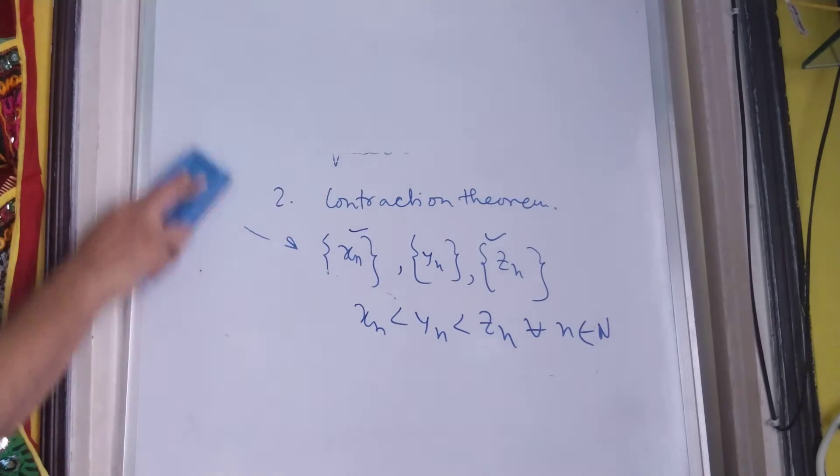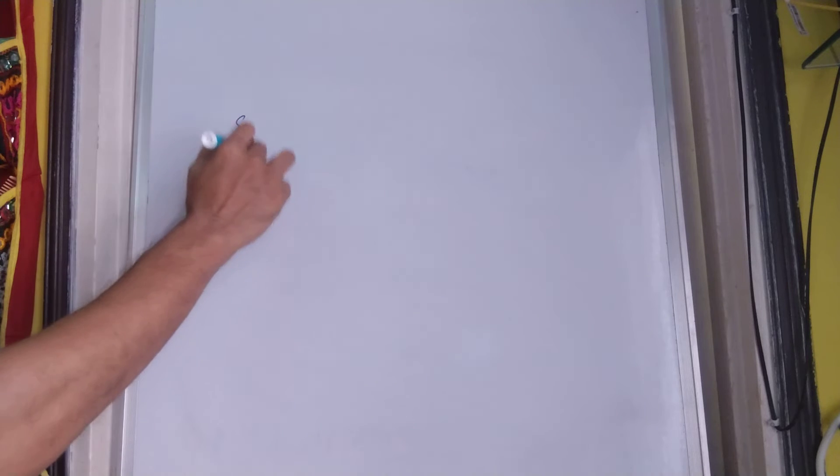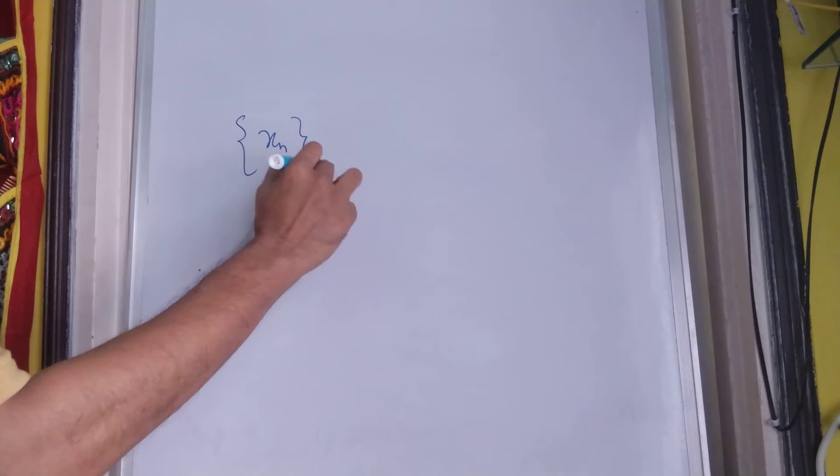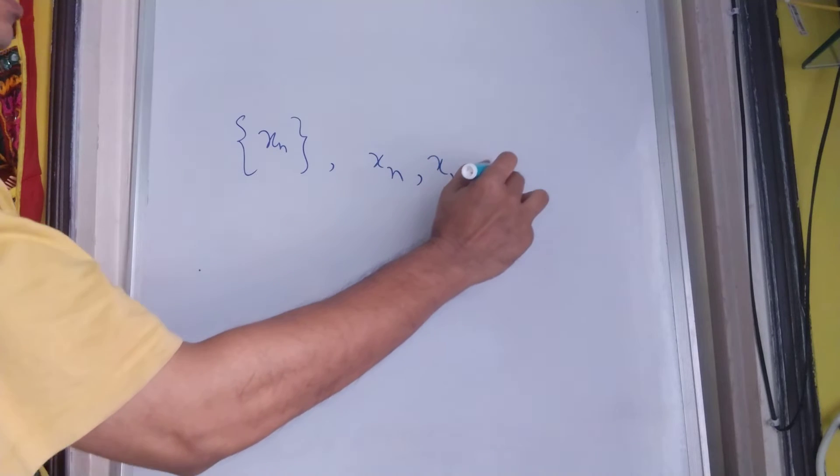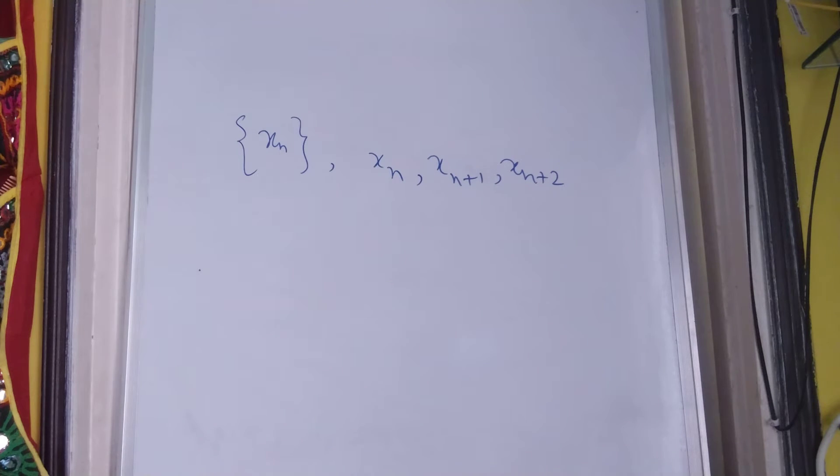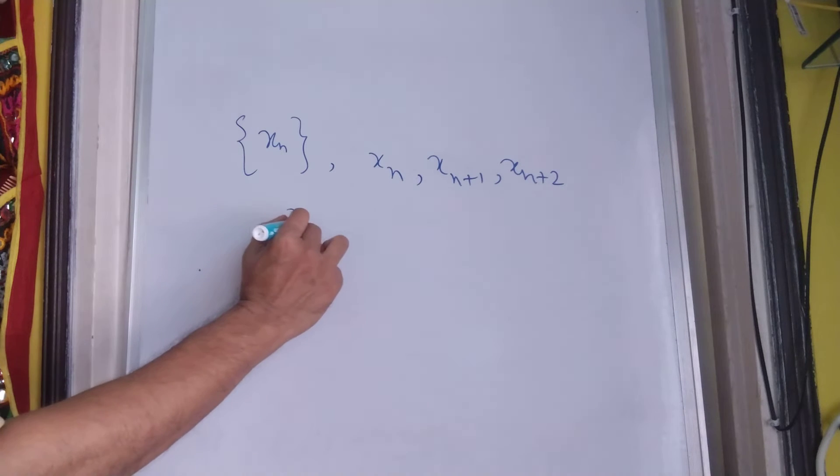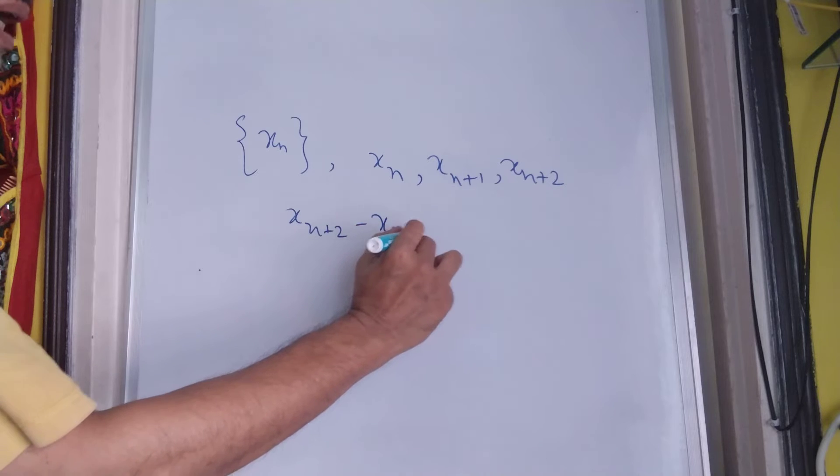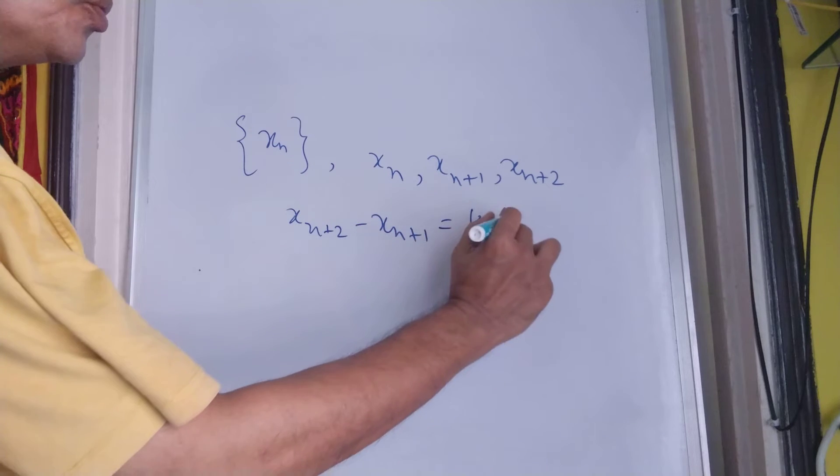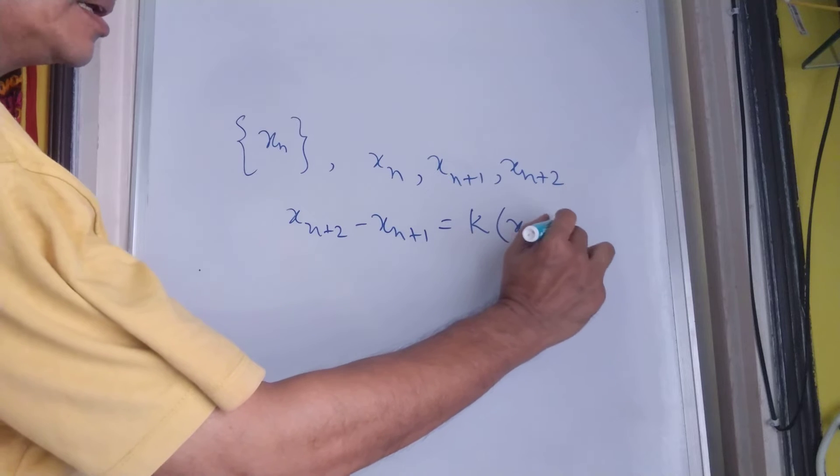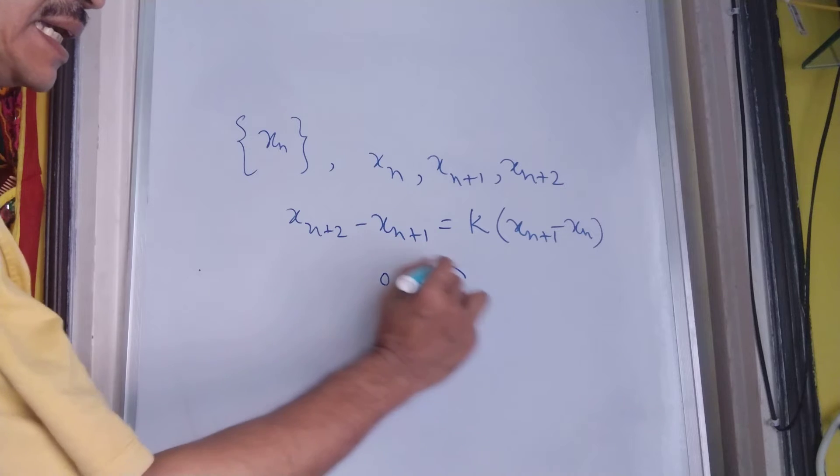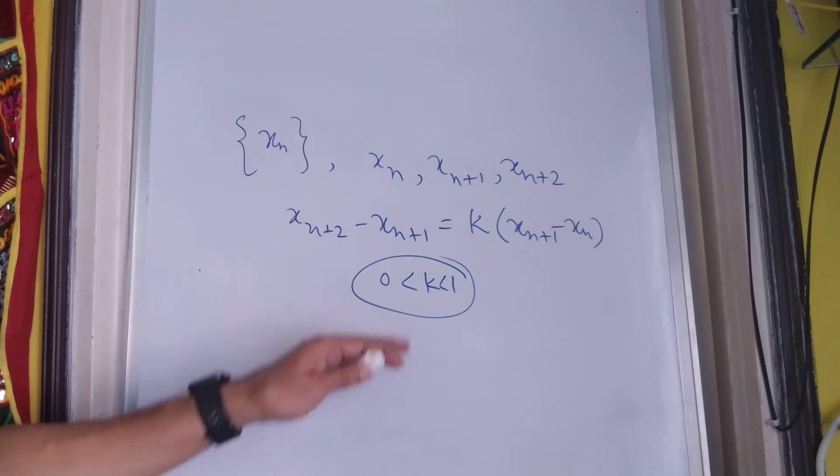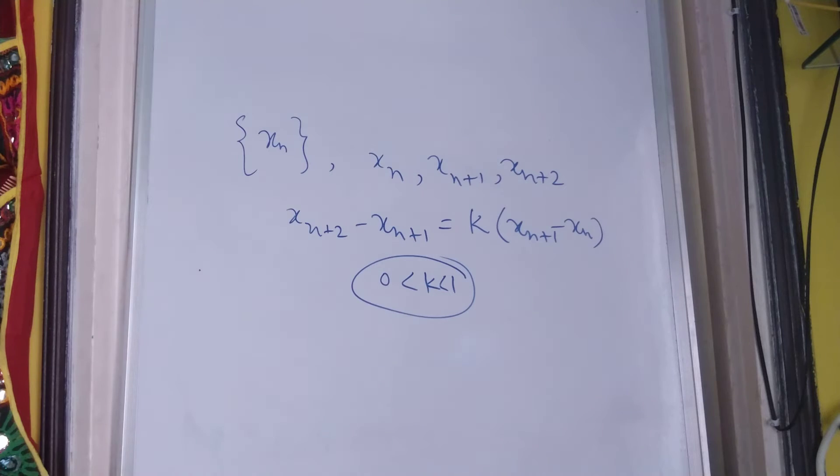Similarly, about this contraction theorem, we prefer to write that if for a sequence xn, we have three terms xn, xn plus 1 and xn plus 2 such that xn plus 2 minus xn plus 1 is equal to k into xn plus 1 minus xn, where this k is a number, proper fraction which is strictly greater than 0 and strictly less than 1.